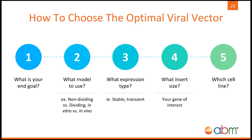Next, you need to determine your model. Are you looking for a vector for dividing cells? Non-dividing? For a mouse model? Then consider expression type — do you want your gene of interest to be expressed for a small amount of time, or do you need permanent long-term expression? Also consider the size of your insert. Each of these vectors have packaging capacities relative to the corresponding viruses. If you have a large insert size — any insert greater than 8 kilobases — I would suggest using HSV or baculovirus, depending on your interest.